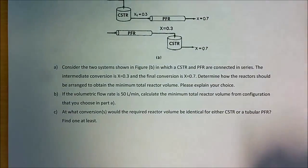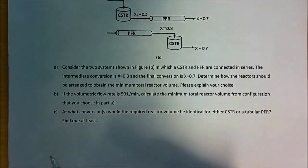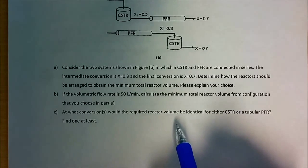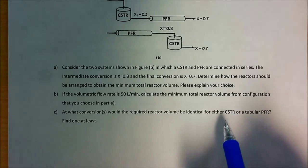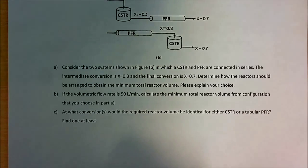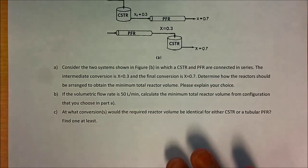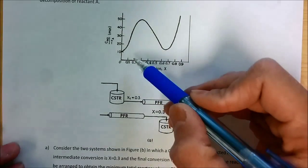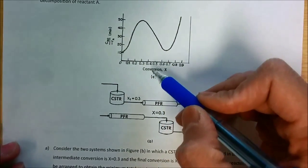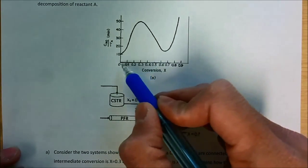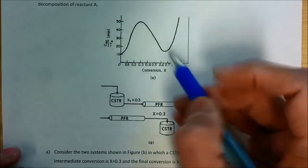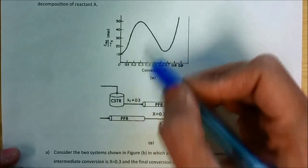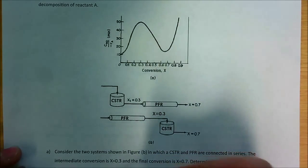For part C, the question is: at what conversion would the required reactor volume be identical for either a CSTR or a tubular PFR? Find at least one such conversion. We need to find a certain conversion between 0 and 1 where the volume of the CSTR equals the volume of the PFR.